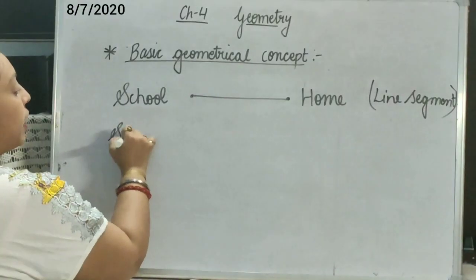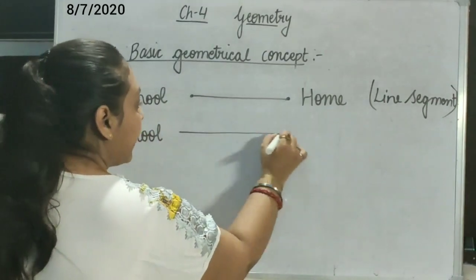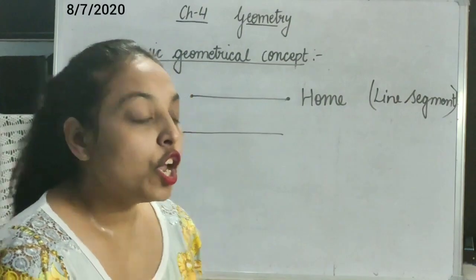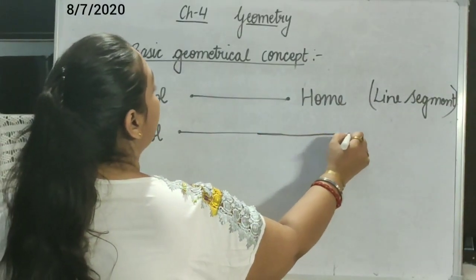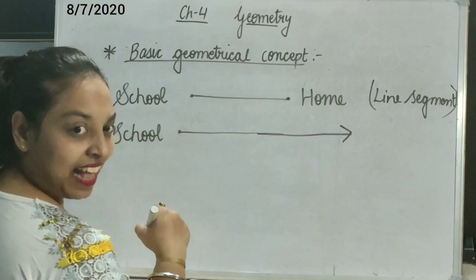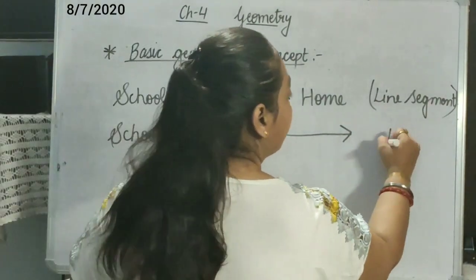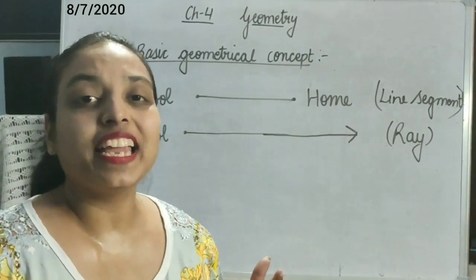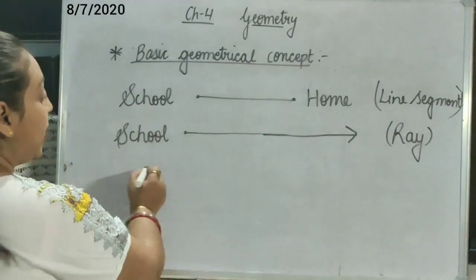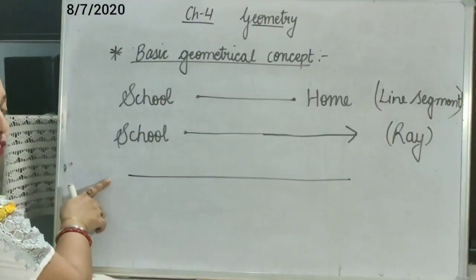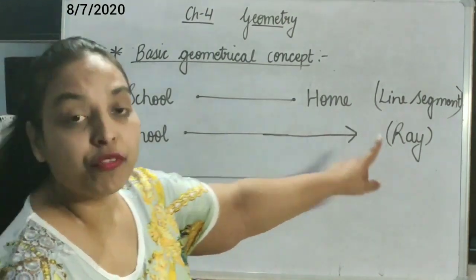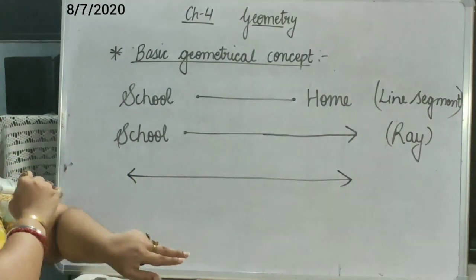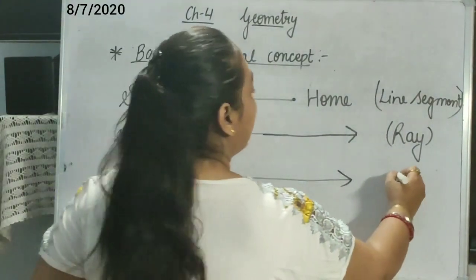But now, if I am telling you that you have to start moving from school, but I am not telling you where to reach, it means the starting point is school, but I am not telling you where to stop — you are moving continuously. This is the example of ray. But in the fourth situation, if we are moving continuously in any direction and we cannot know from where we started and we don't know where we have to reach, we are moving continuously in both directions — that will be known as line.